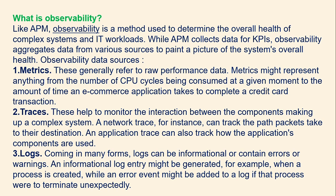What is observability? Like APM, observability is a method used to determine the overall health of the complete IT infrastructure and workloads. While APM collects data from KPIs, observability aggregates data from various sources to paint a picture of the system's overall health. The first observability data source is metrics, which generally refers to raw performance data — for example, the number of CPU cycles consumed or the time an e-commerce application takes to complete a credit card transaction.